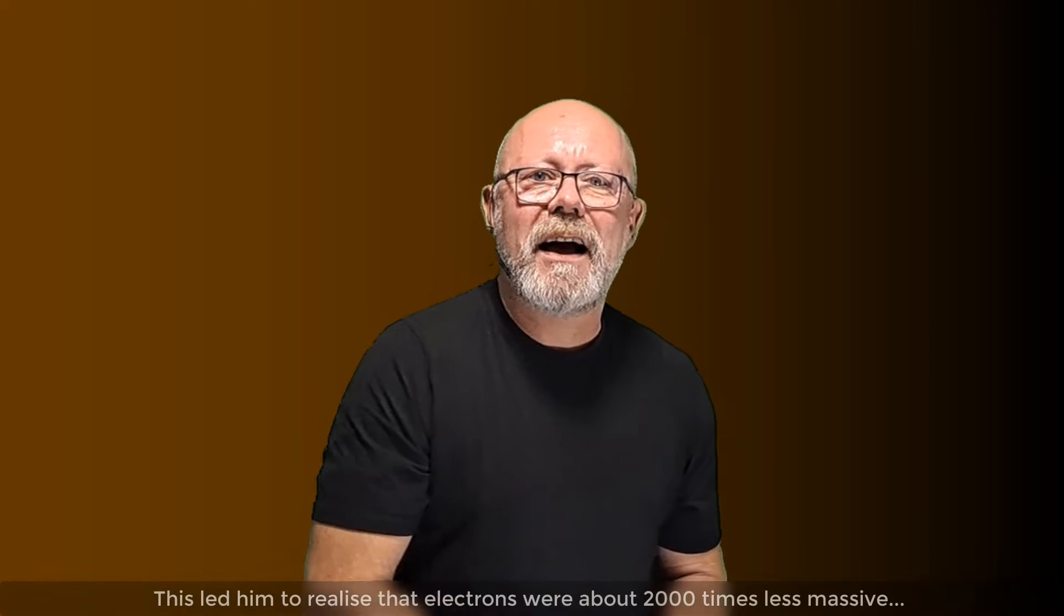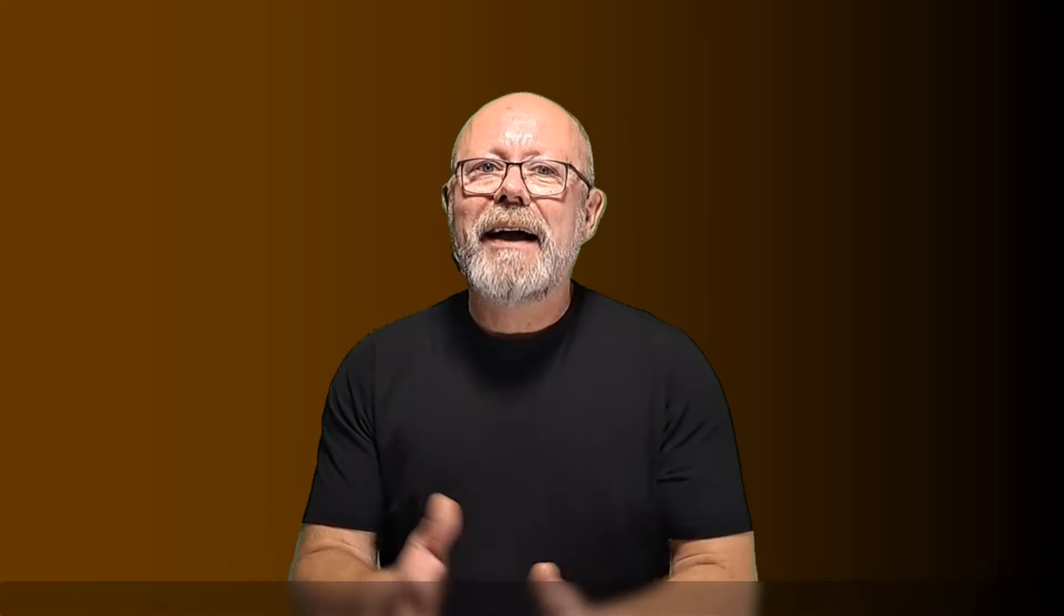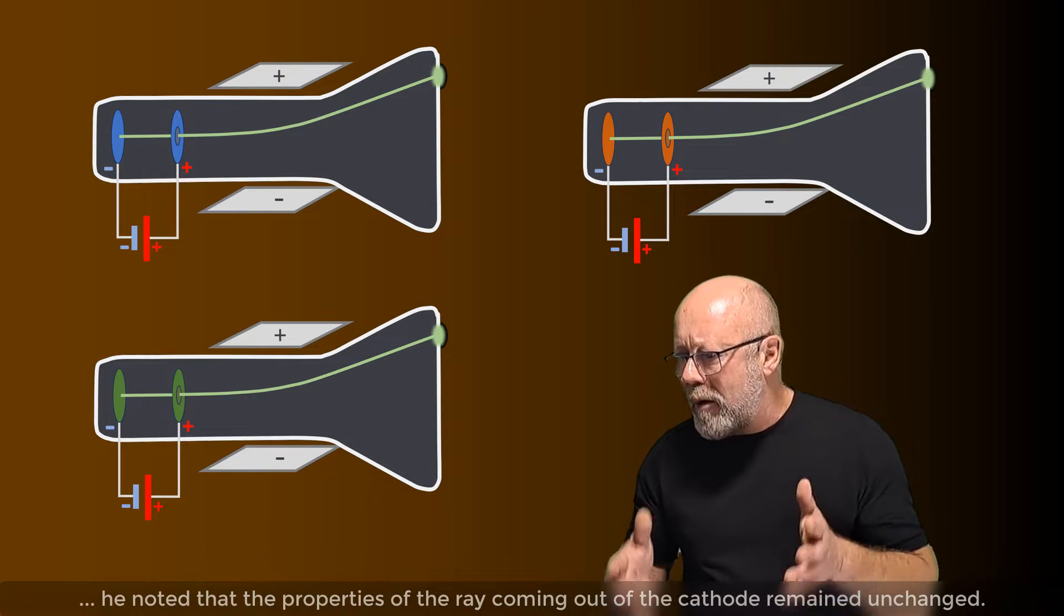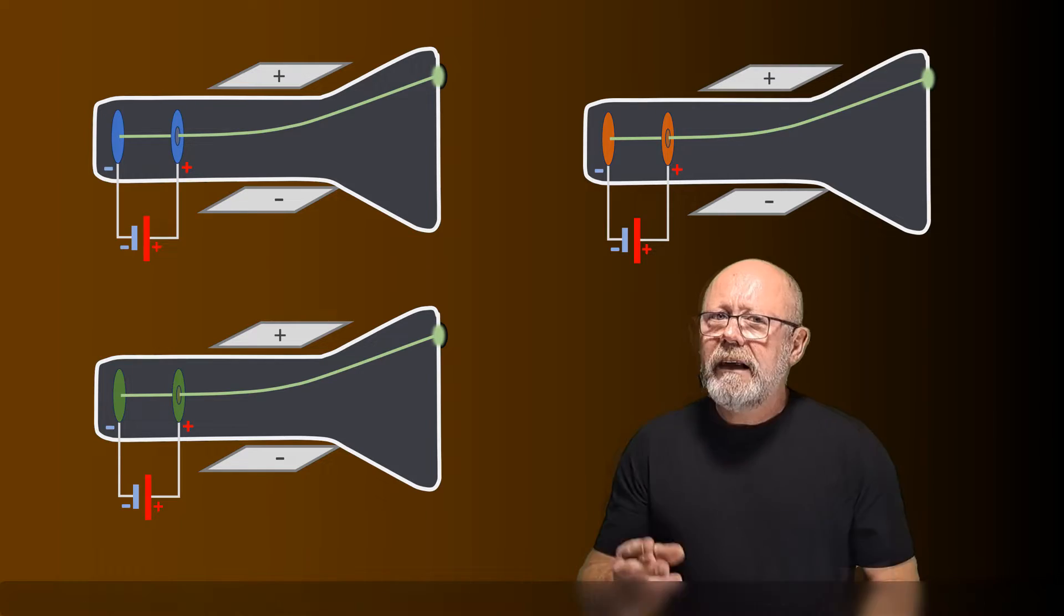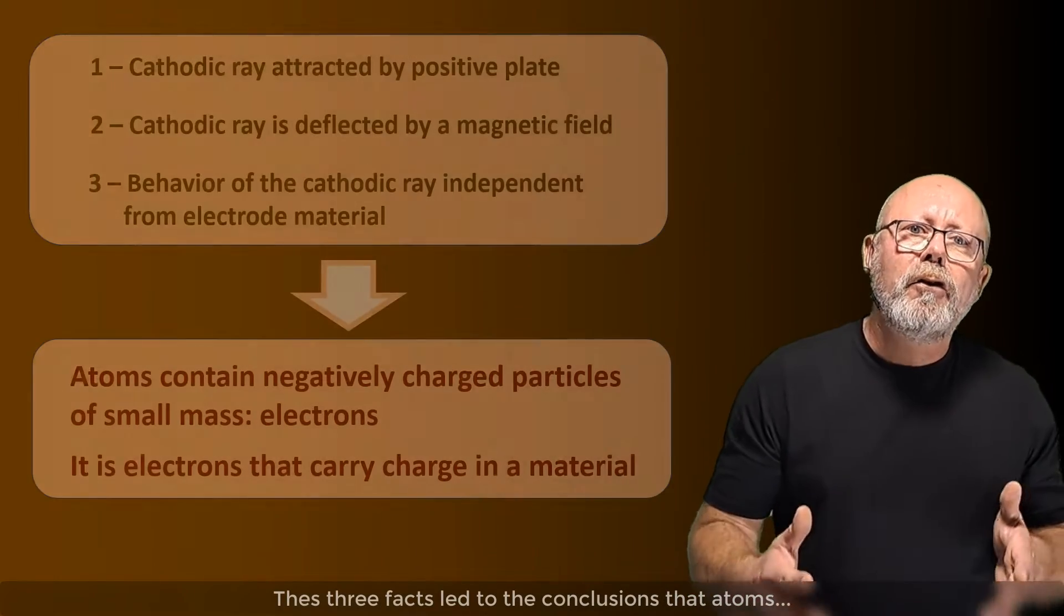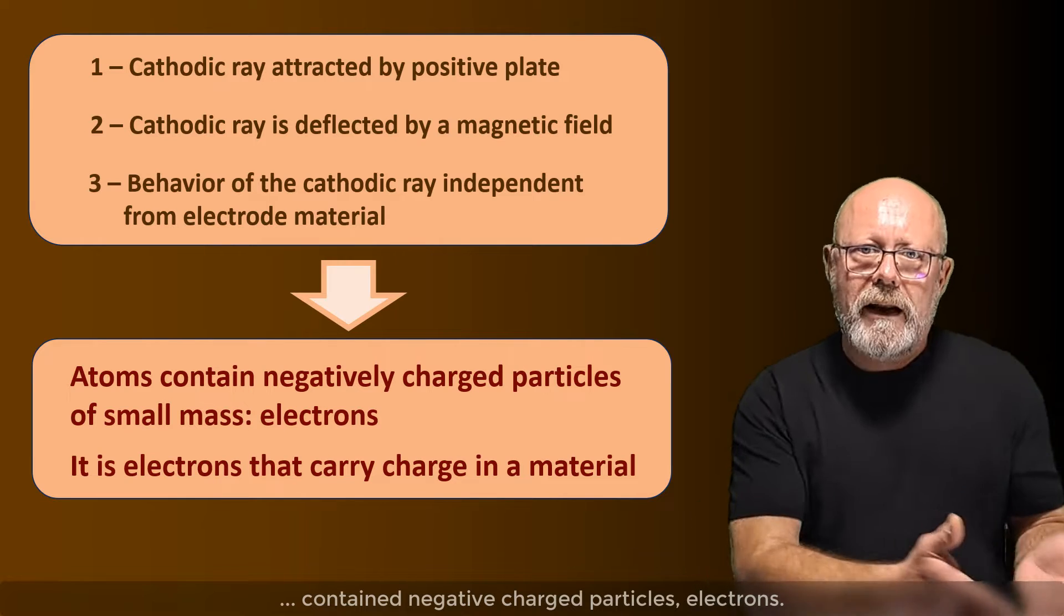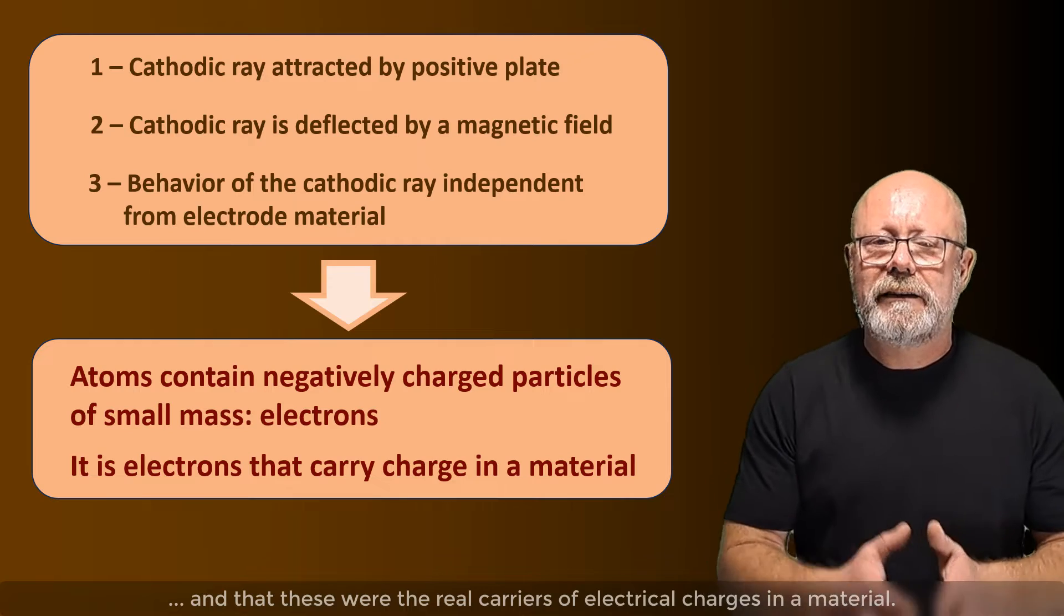This led him to realize that electrons were about 2000 times less massive than the hydrogen atom. Finally, by changing the material of the electrodes, he noted that the properties of the ray coming out of the cathode remained unchanged. These three facts led to the conclusions that atoms contained negatively charged particles, the electrons, and that these were the real carriers of electrical charges in a material.